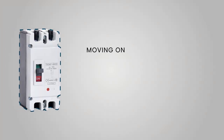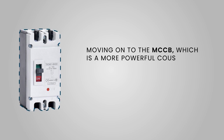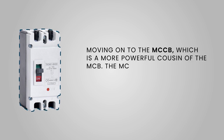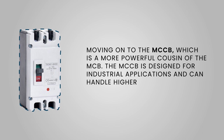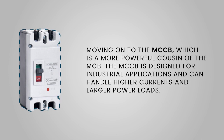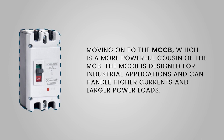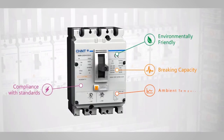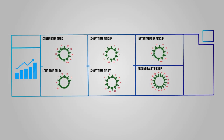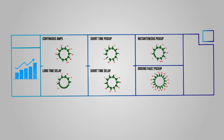Moving on to the MCCB, which is a more powerful cousin of the MCB. The MCCB is designed for industrial applications and can handle higher currents and larger power loads. With its adjustable trip settings, the MCCB provides precise and reliable protection against overcurrents, making it ideal for industrial machinery and equipment.